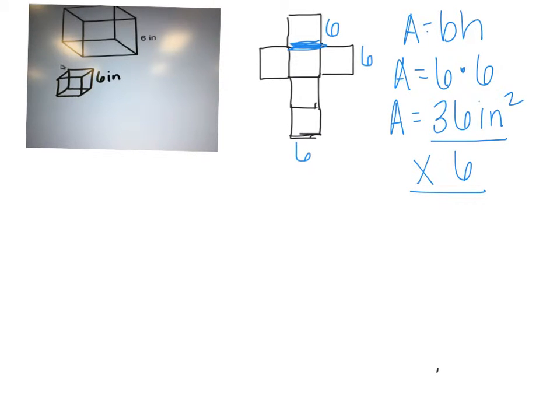So 36 times 6. What's 6 times 6? 36. Carry the 3. 6 times 3 is 18 plus 3 is 21. And that's going to be our total surface area for this cube.